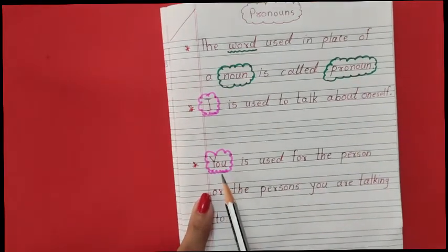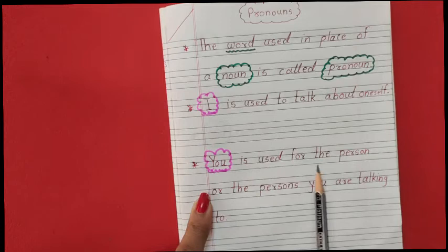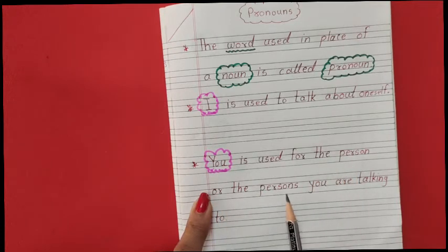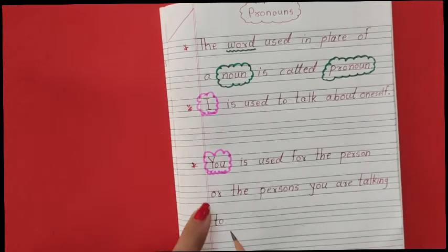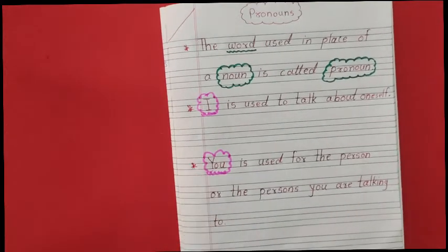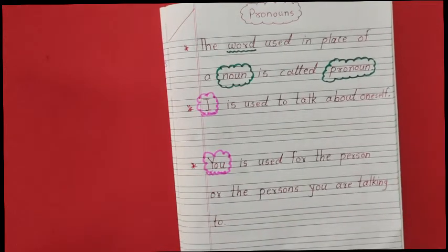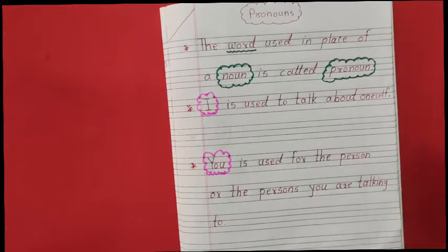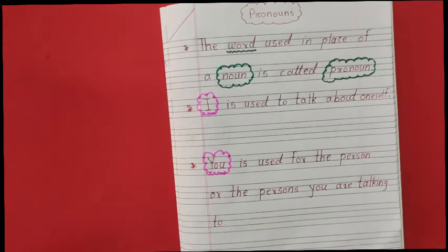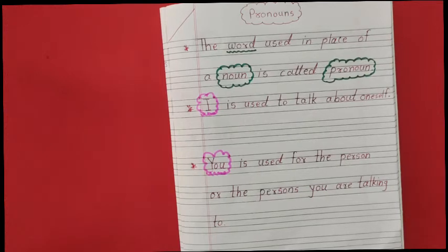Next is you. You is used for the person or persons you are talking to. You can be used both ways - singular as well as plural. For example, you are good. Suppose there is one person, we can use you. Or if there are some students, we can use the same: you are good students.